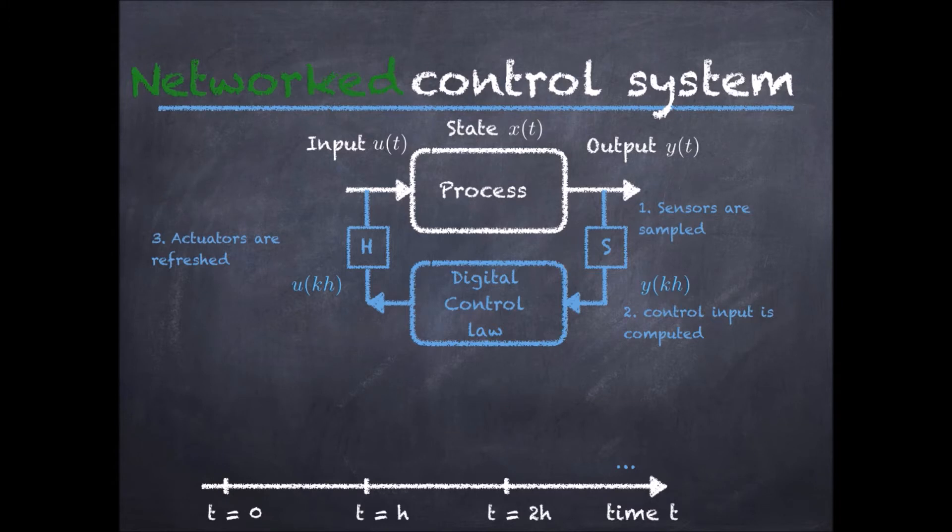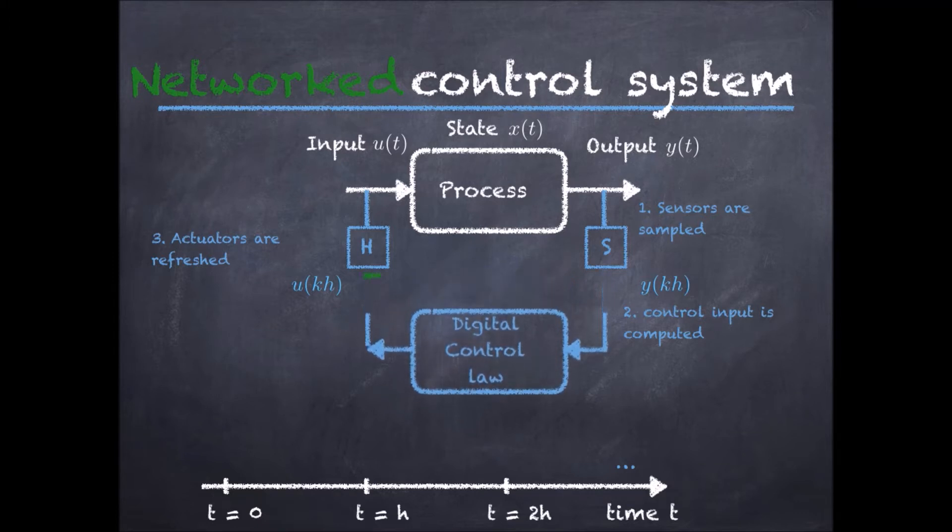Now, in a networked control system, the controller might not be collocated with the process. It may actually be at a very different location, and therefore the sensors and actuators must communicate with the controller over a communication link or a communication network.